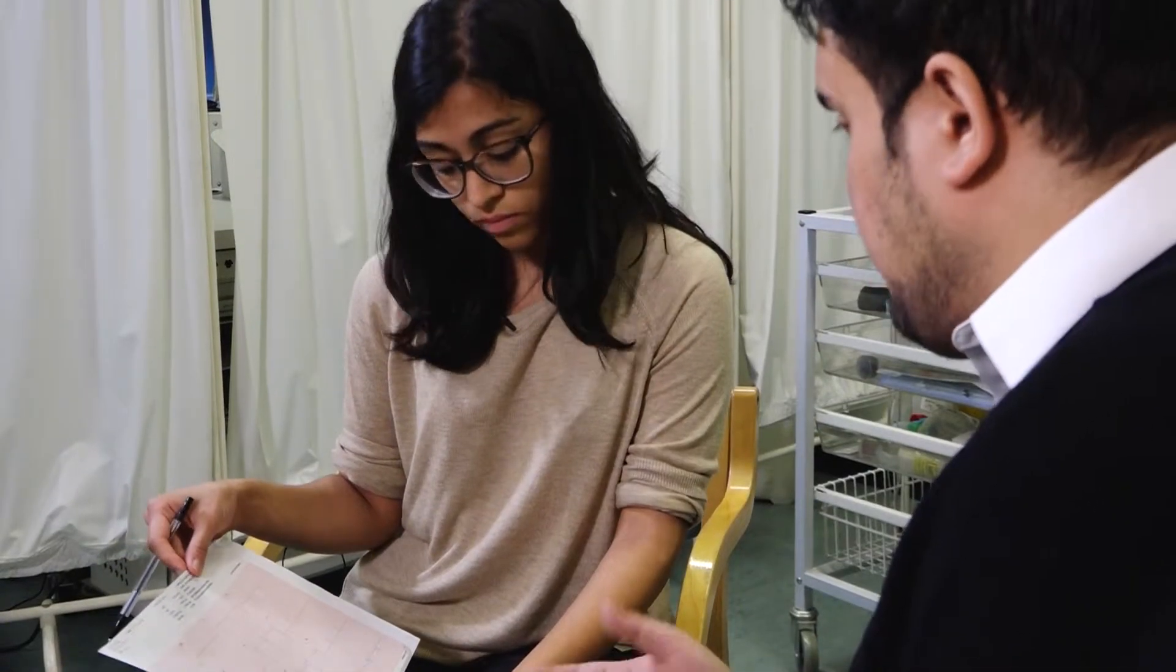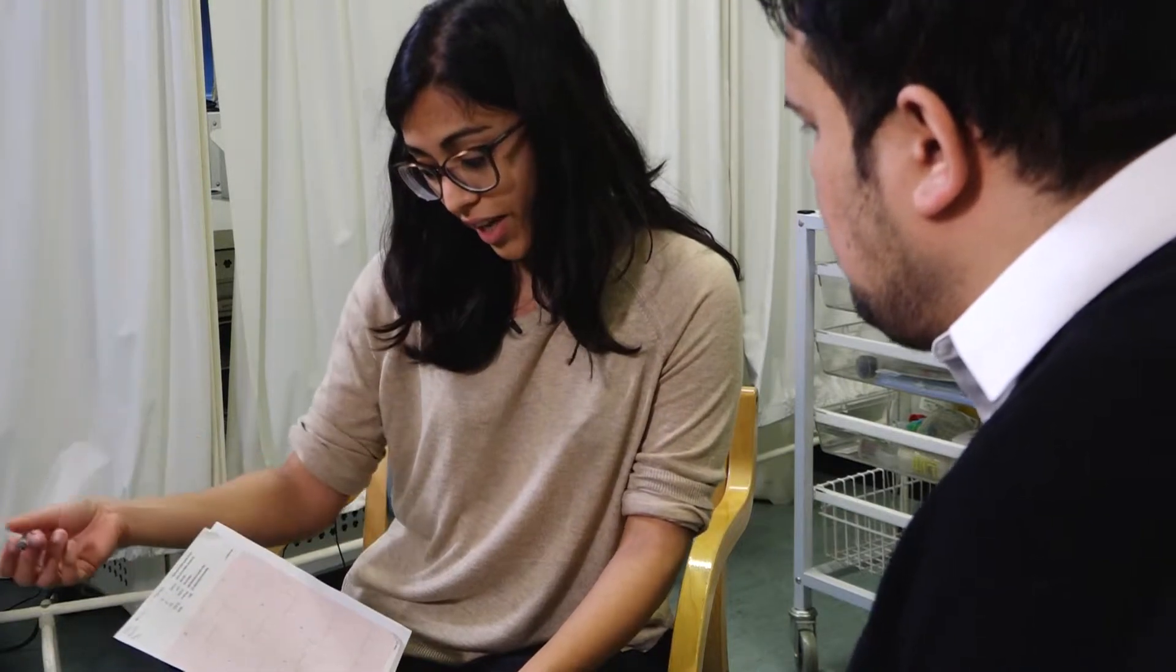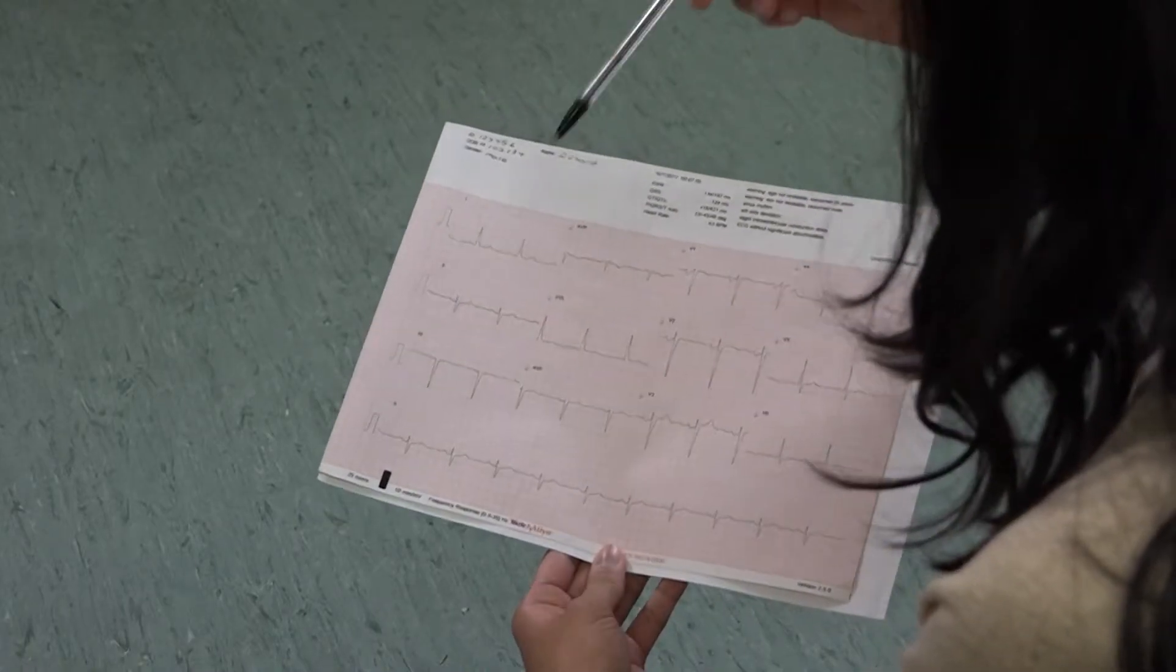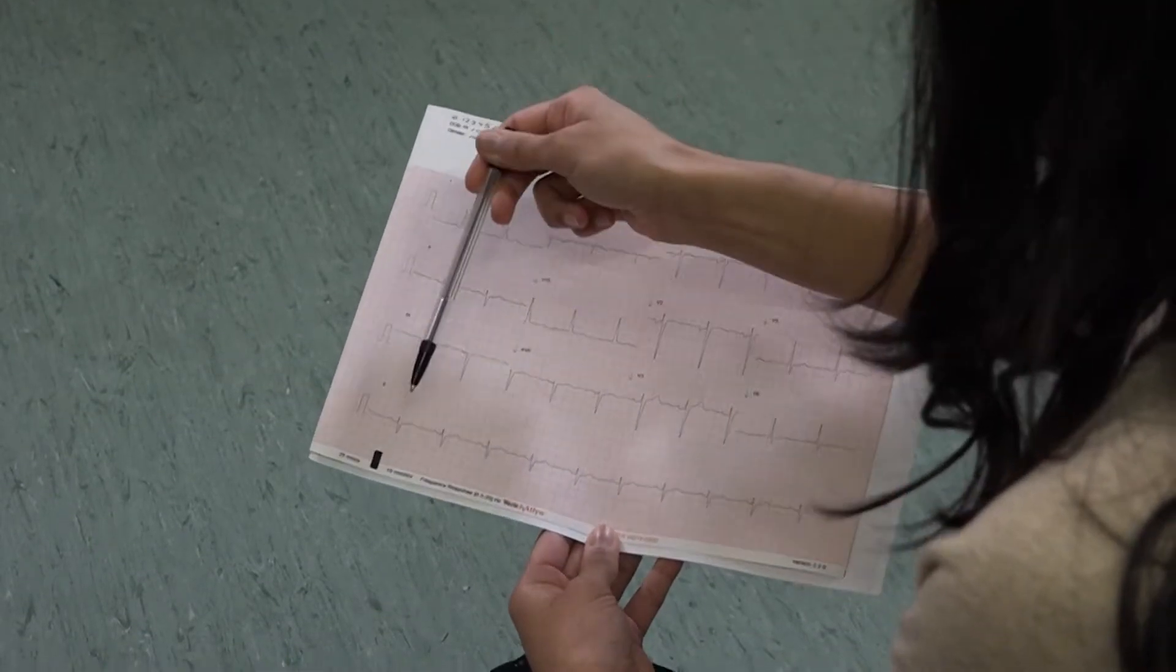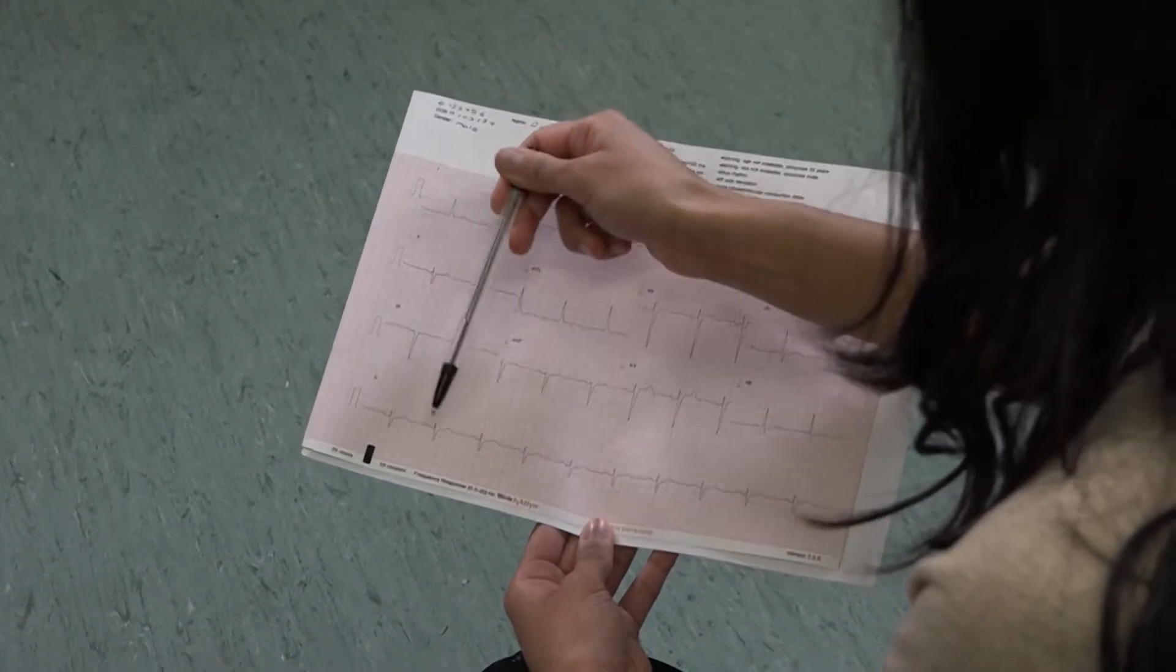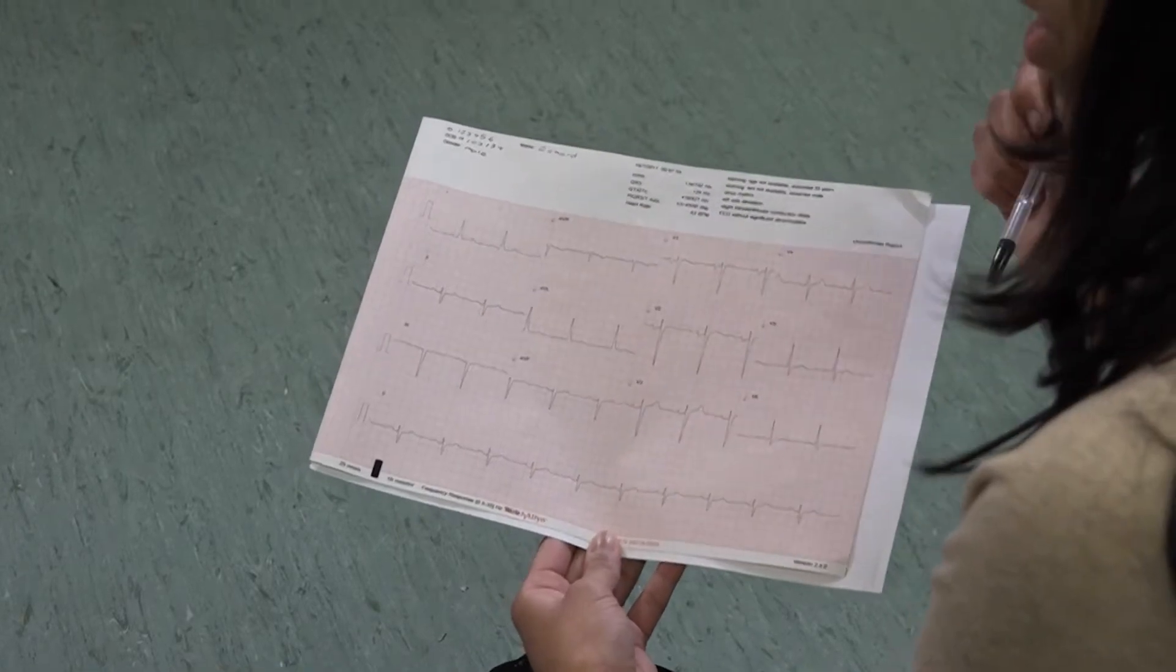In this case, the heart rate is approximately 60 beats per minute, and we can find that out by calculating the QRS complexes and timesing it by six.